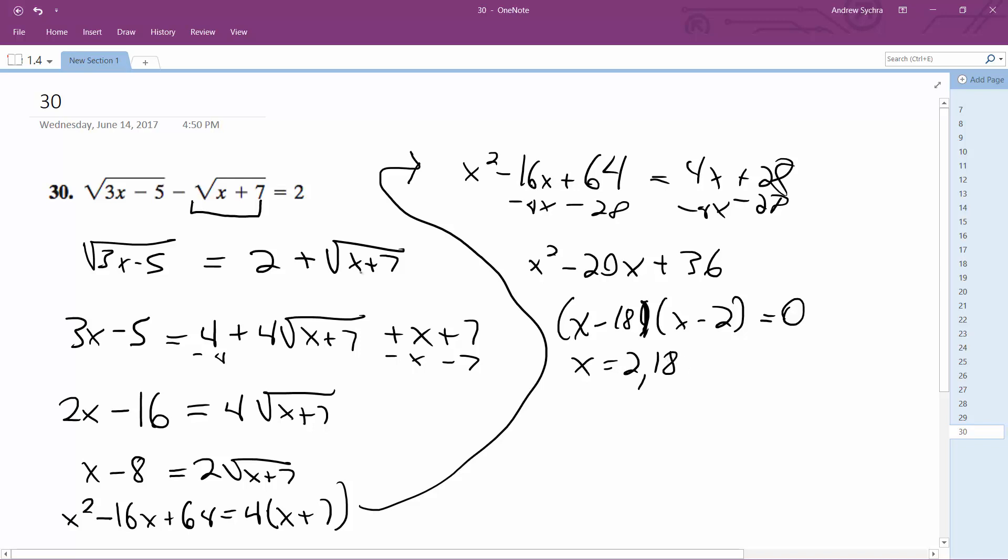But are these solutions? We can test it. 18 times 3 is 54. Minus 5 is 49, so that's square root of that 7. And then 18 plus 7 is 25. 7 minus that. Yeah, so 18 works.